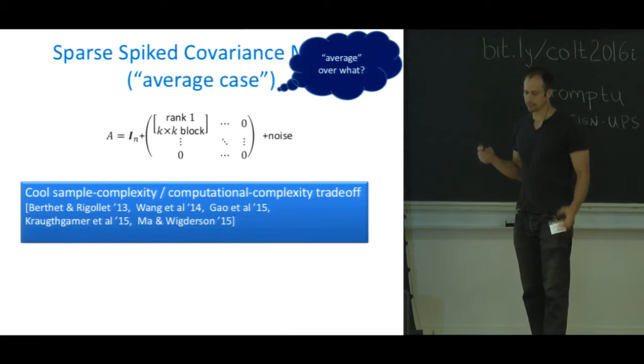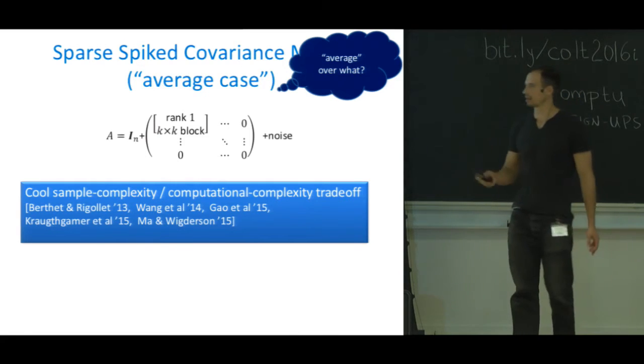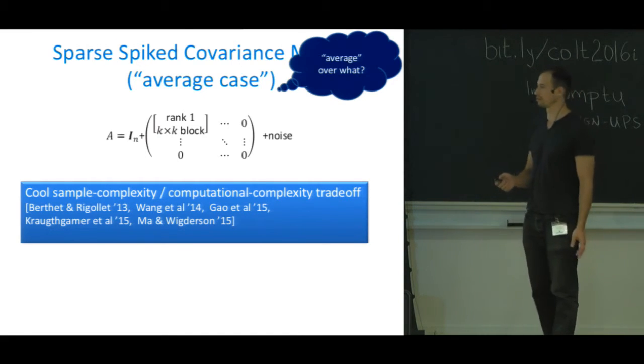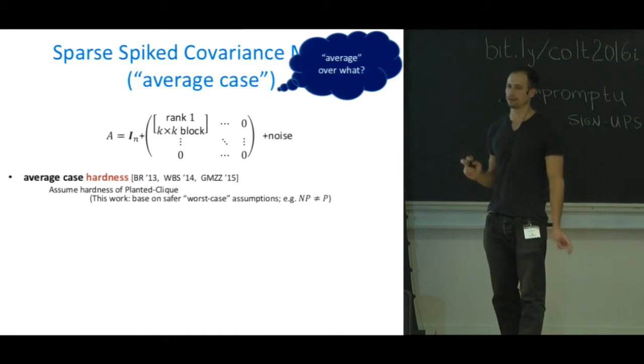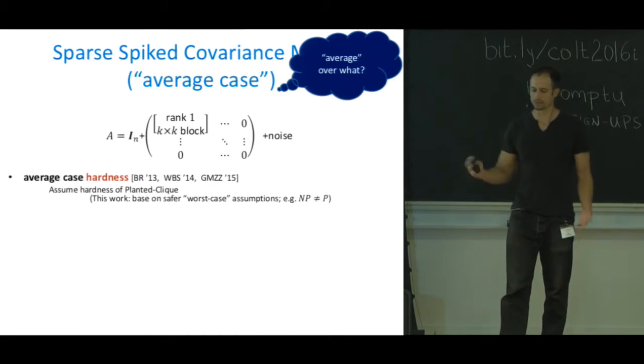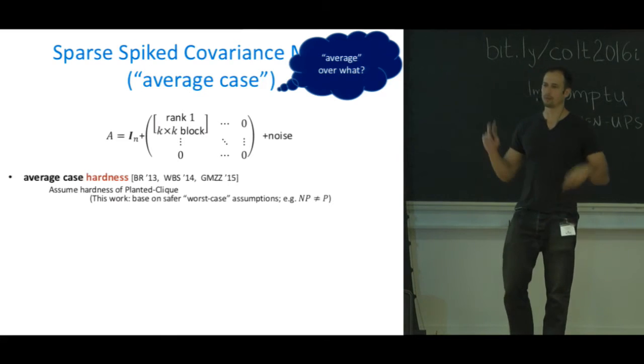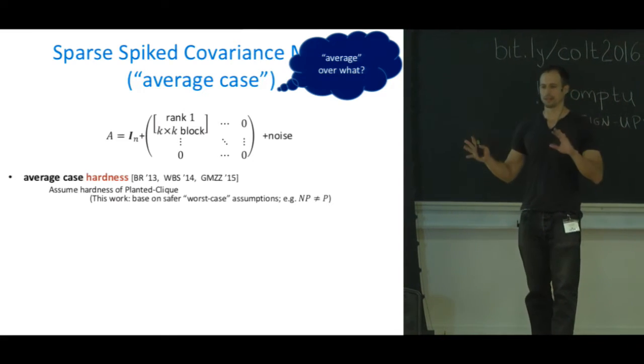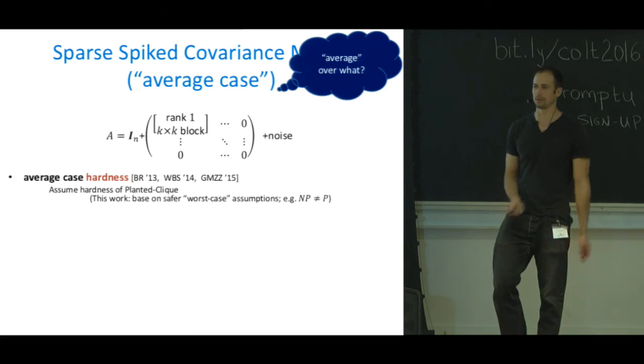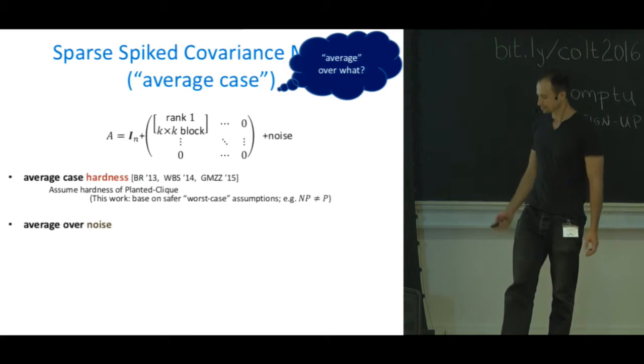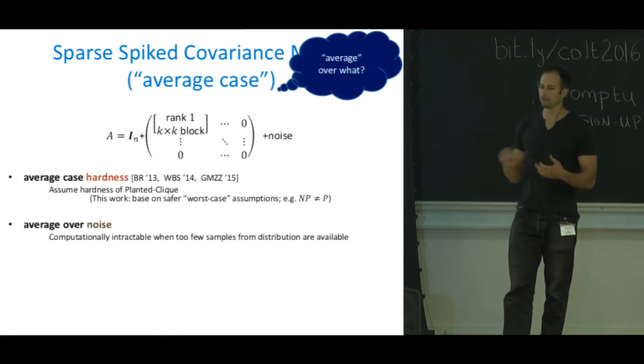This has been called the average case problem. Let me tell you what average case means because it's confusing for me at least. First, it means average case hardness where we assume hardness of planted clique. It's confusing because worst case here is better—our worst case hardness assumptions are safer than planted clique. Planted clique is great, but if you can use worst case assumptions you should always do that. Second, average case means average over noise.